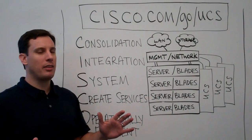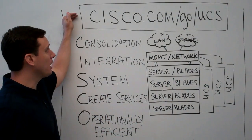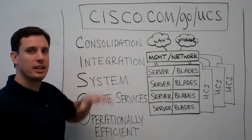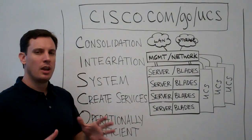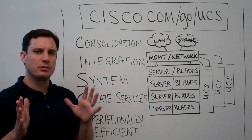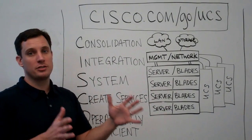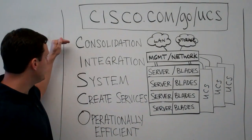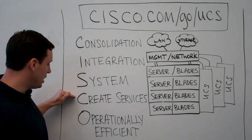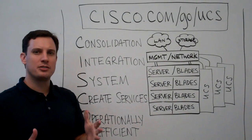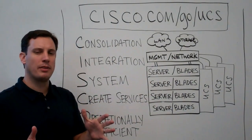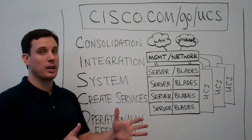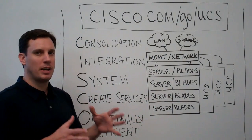If you forget anything that we talk about in this, you can always come back to cisco.com/go/ucs to get further details about the system. Let's do this in a simple way for you to remember how to go about positioning the Cisco UCS system, using the acronym CISCO. You're already familiar with the platform, but let's talk about this in a simple, easy way to talk to your service provider customers about why this is the best platform.